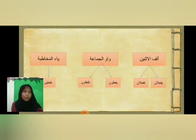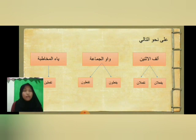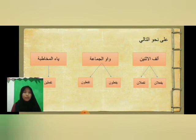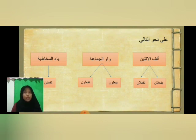Apa bentuk-bentuk tersebut? Yang pertama, bentuk dari aliful isnin yaitu Yaf'alani — merupakan domir dari Huma — kemudian Taf'alani — merupakan domir dari Antuma. Untuk wawul jama'ah, bentuk pertama ada Yaf'aluna — domir dari Hum — dan bentuk kedua Taf'aluna — domir dari Antum. Lalu bentuk dari ya'ul mukhotbah yaitu Taf'alina — merupakan domir dari Anti.